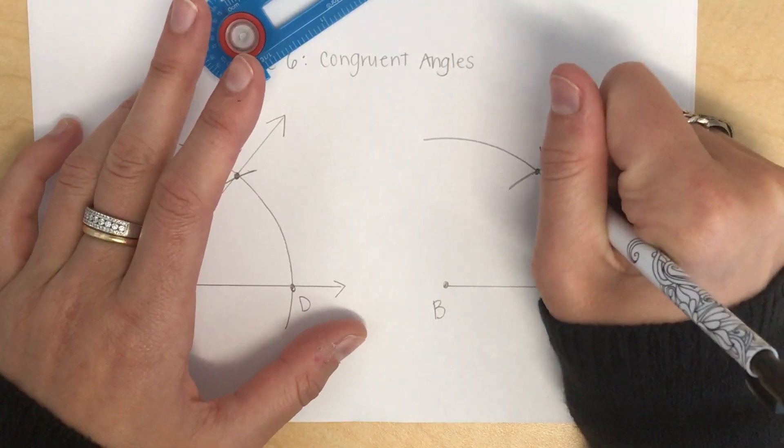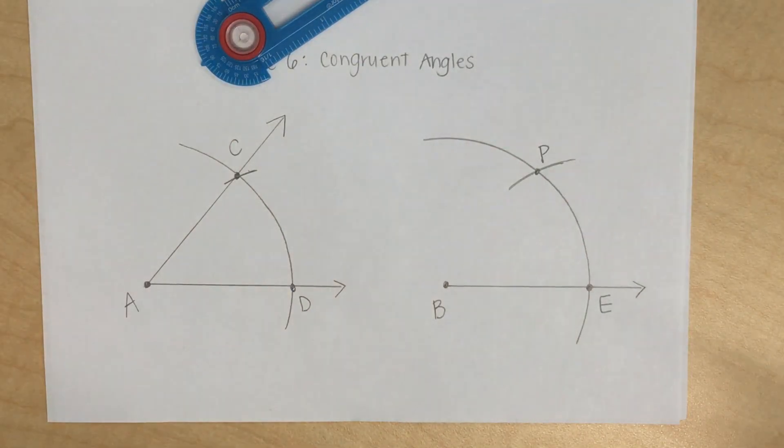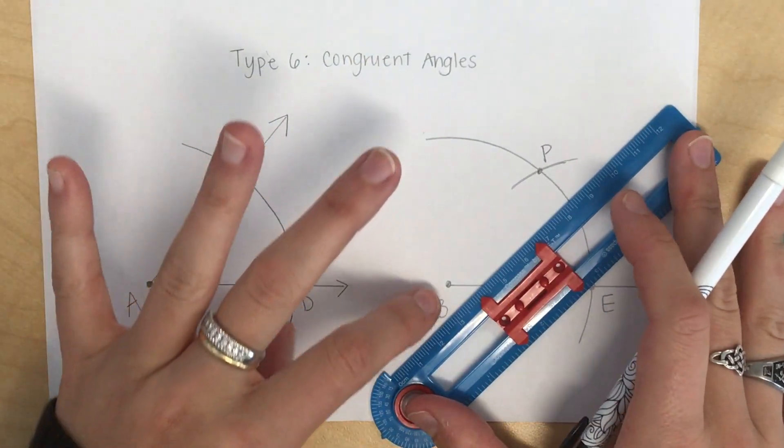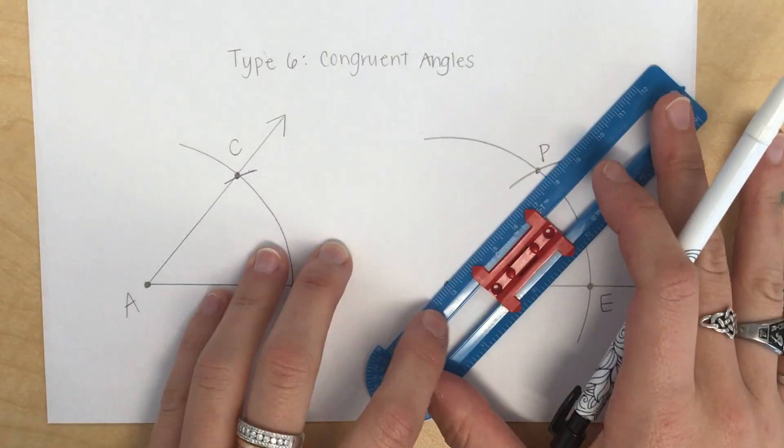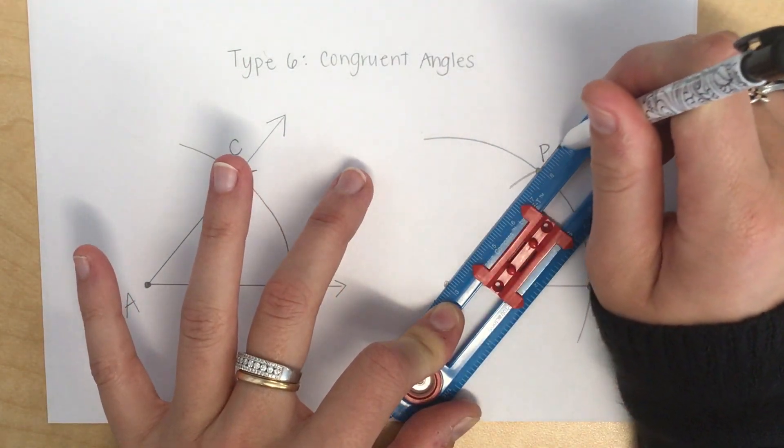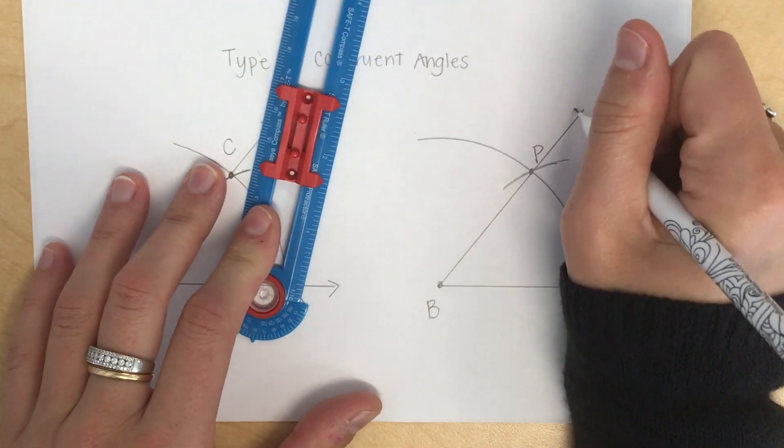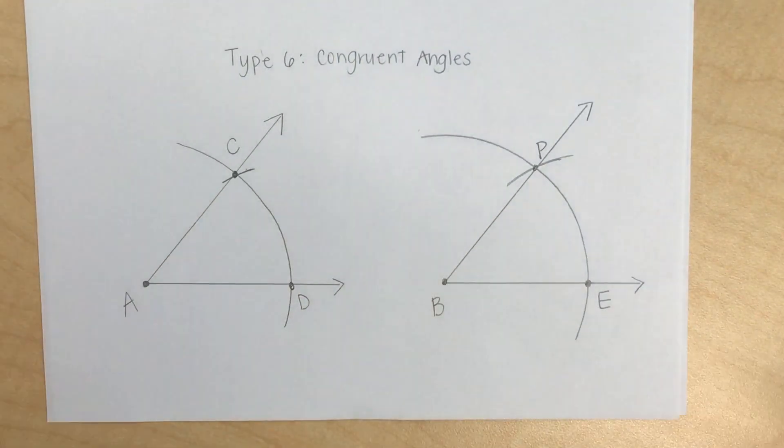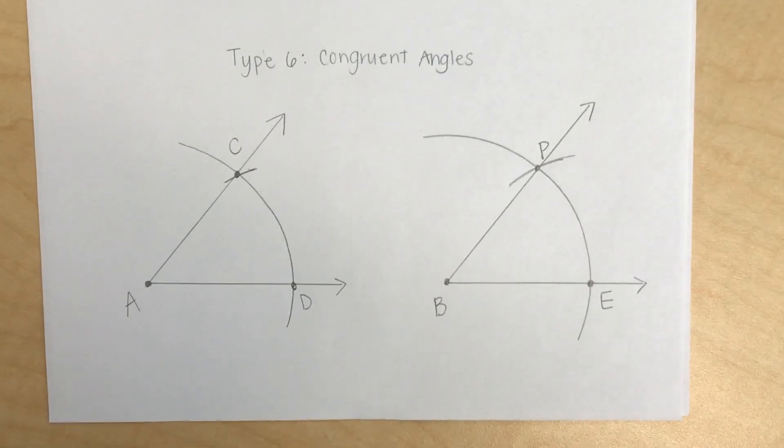So I'm now going to take my straight edge, and I'm going to connect point B to point P. Again, I want to use the straight edge. I don't just want to eyeball it. And now I have created two angles that are congruent to one another. And now you're finished. So go ahead and pause the video and give it a try.